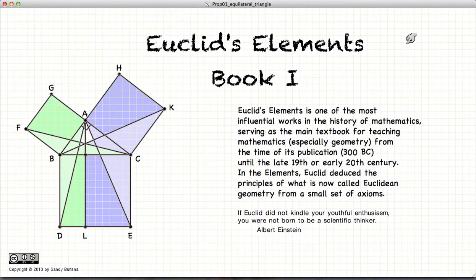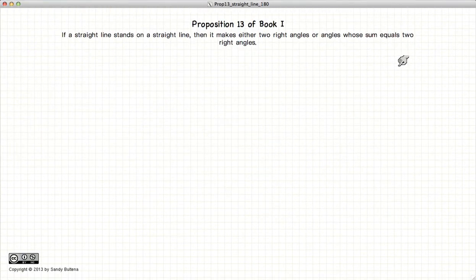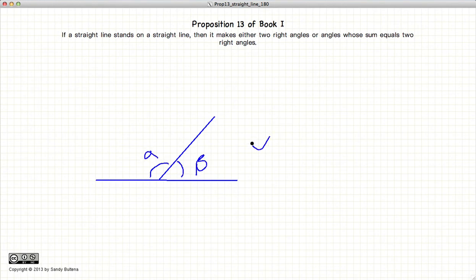Hi and welcome to my tutorials on Euclid's Elements Book 1. This video presentation is going to be on Proposition 13 of Book 1, which states that if we have two lines connected at a point B, then the angle alpha plus the angle beta is equal to 180 degrees or two right angles.